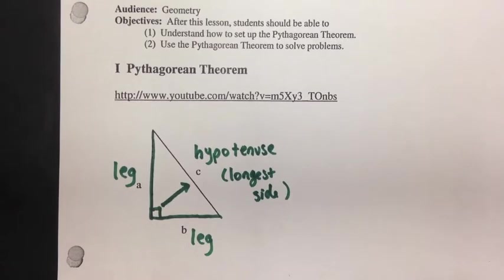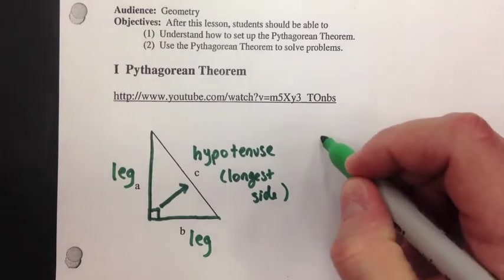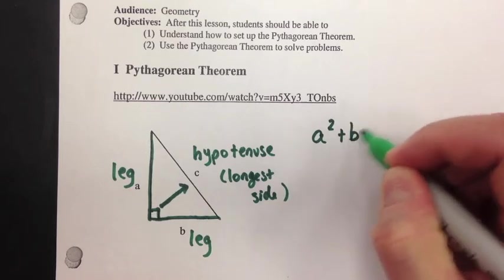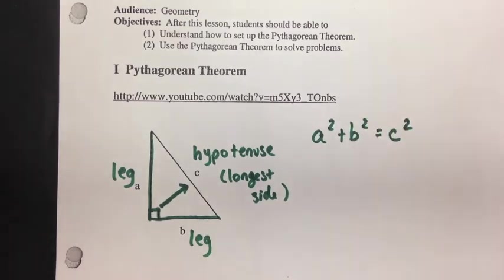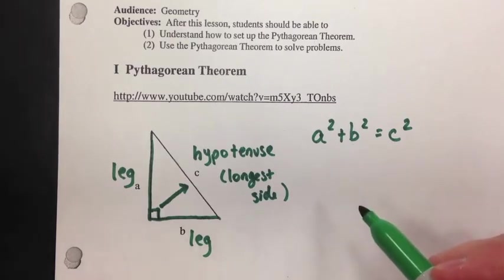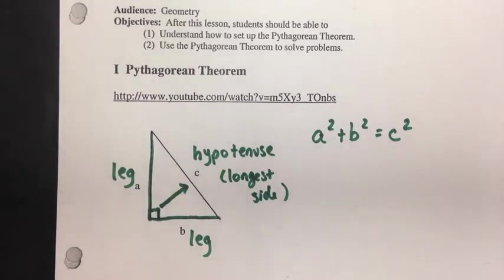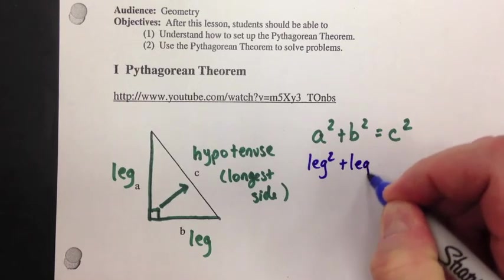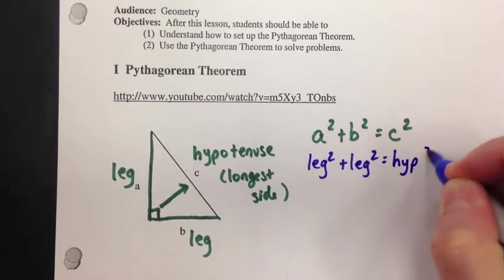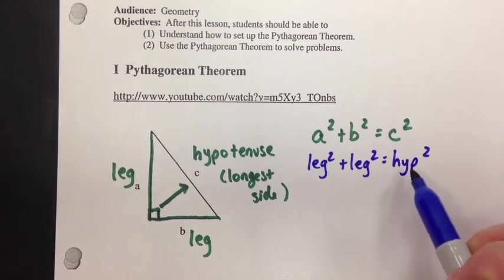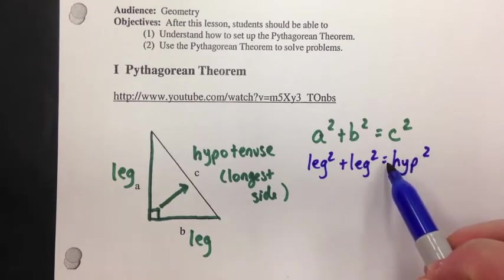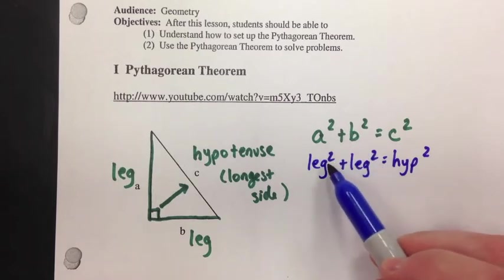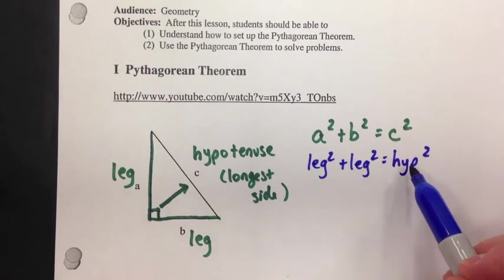Now, the Pythagorean Theorem is really a formula. And the formula goes like this: A squared plus B squared equals C squared. This is probably the most famous formula in geometry. If you're going to remember one thing, this would probably be it. A squared plus B squared equals C squared. And we can write that with the terms leg squared plus leg squared equals the hypotenuse squared. The hypotenuse is always the value squared that's by itself. A and B are your legs. You square them, you add them. And then that's equal to the hypotenuse squared.